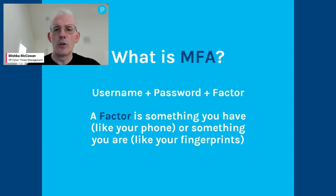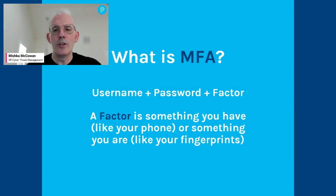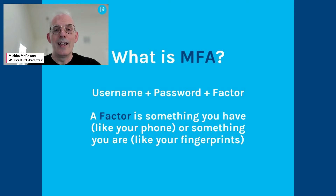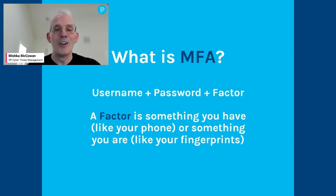The way MFA works is that it requires you to provide something in addition to your username and password. That something extra is called a factor, and it's either something you have or something you are. An example of something you have is your smartphone, while an example of something you are is your fingerprint.